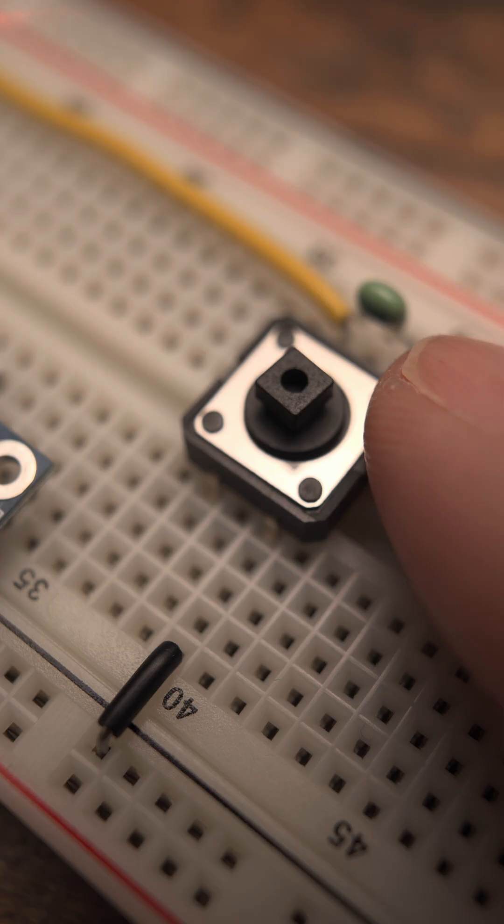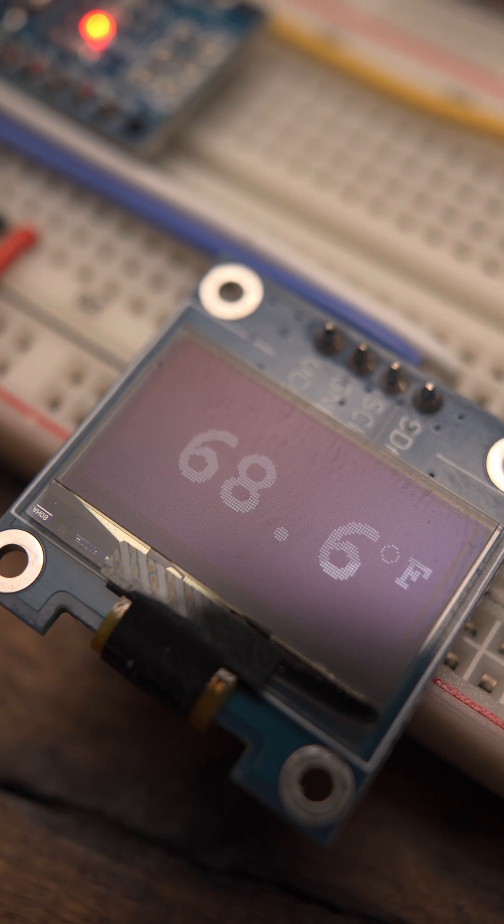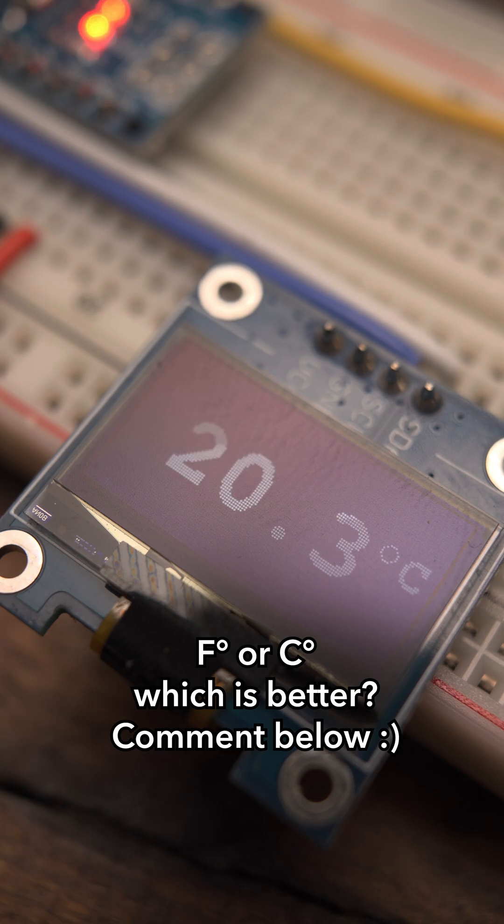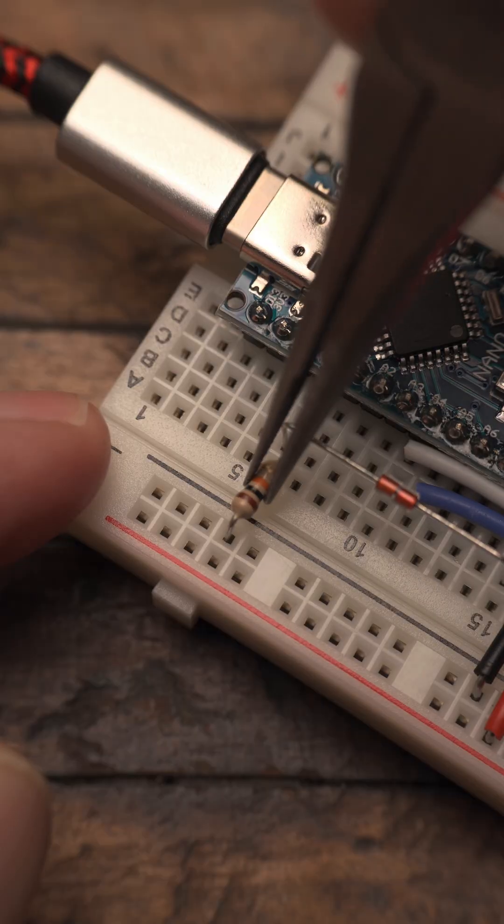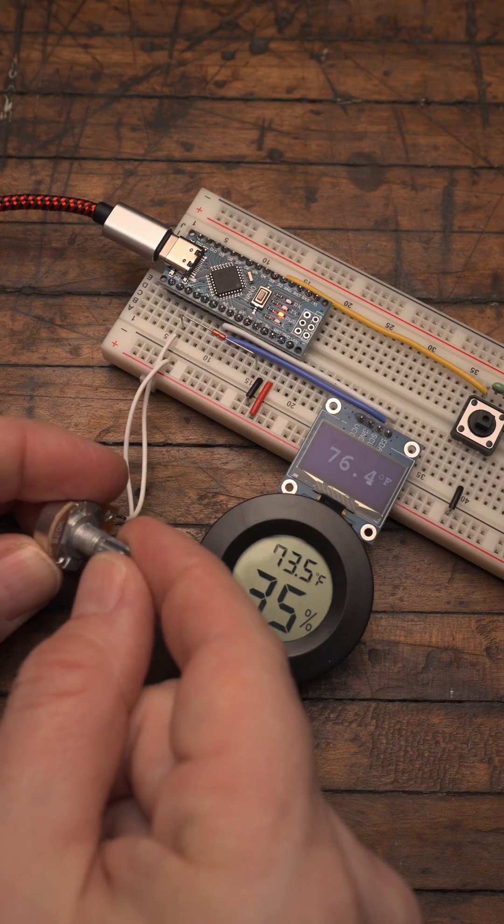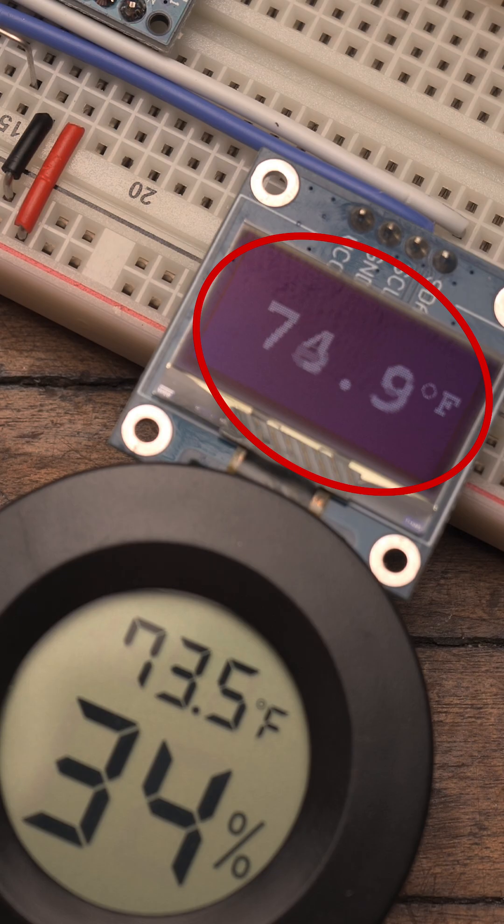I added a button and additional code to switch between Celsius and Fahrenheit. Because of the tolerance in the various components, we can't expect this to be 100% accurate. So I'm going to replace the other 10K resistor with a potentiometer so we can have a way to calibrate it.